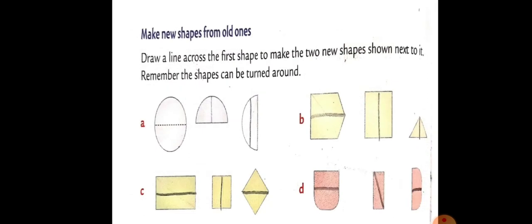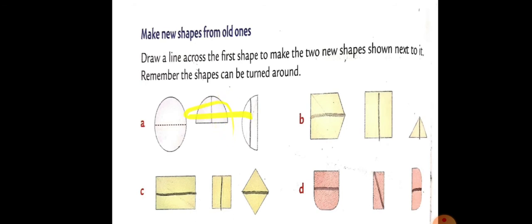Now, make new shapes from old ones. Draw a line across the first shape to make the two new shapes shown next to it. Remember, the shapes can be turned around. Aise hi aapko sab shapes mein across line banana hai aur new shapes banana hain. Understood?